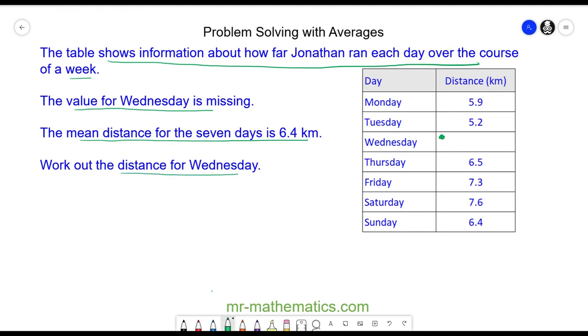We know the mean average is the sum of all the data divided by the sample size. To work out the sum of the distance traveled, we need to call Wednesday's value x, and x is the value we're trying to find.